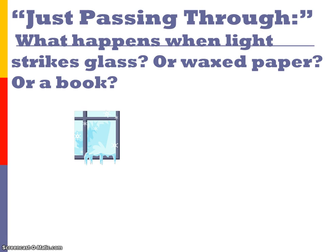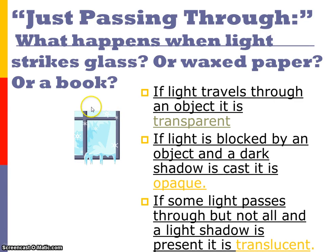Let's talk about what electromagnetic radiation waves can pass through and what they cannot. We refer to objects as to whether they allow light waves to pass through them or not. If a light wave can travel through an object, it's called transparent — things like windows. If some light is blocked and a dark shadow is cast, we call those objects opaque. If a little bit of light passes through but not all, we call these objects translucent. So: transparent means all the light travels through; translucent means some light travels through; and opaque means most of the light is blocked.